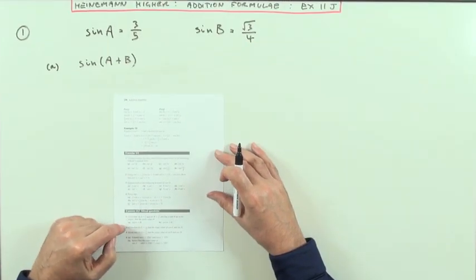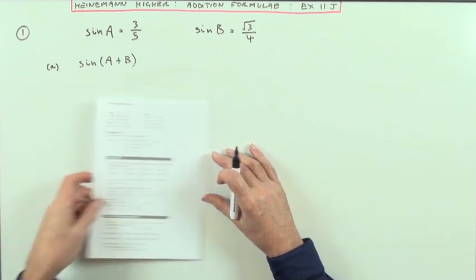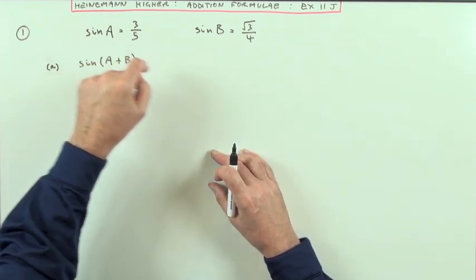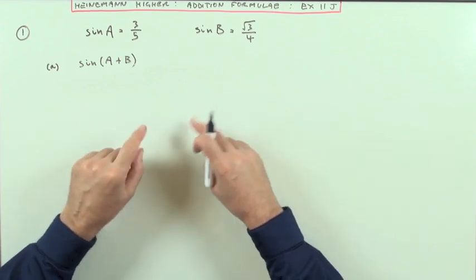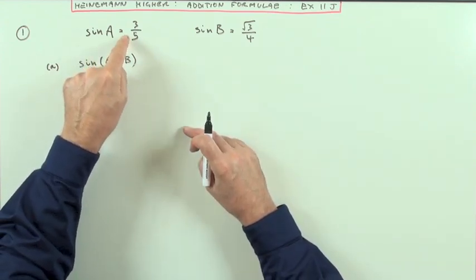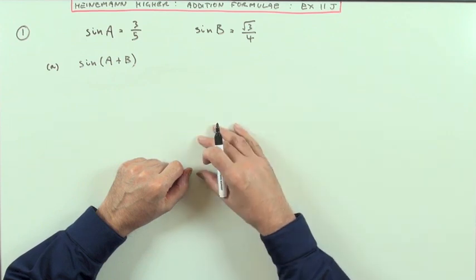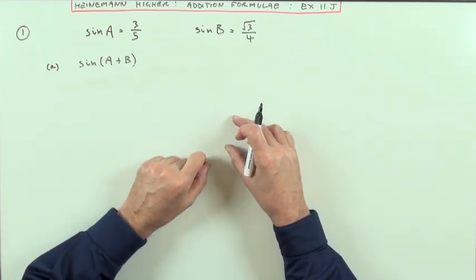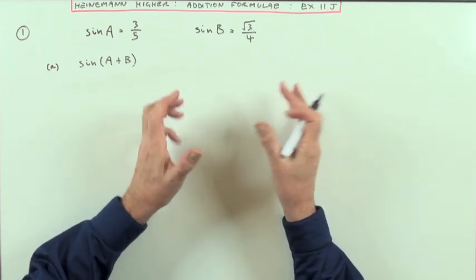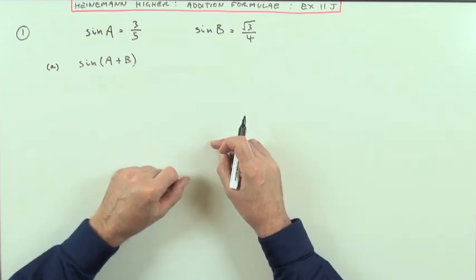For question one, we're finding the exact value of sin(A+B) given the exact values of sin(A) and sin(B) separately. It's not a case of finding A equals inverse sine of 3/5, getting an approximate answer, finding B equals inverse sine of √3/4, getting an approximate answer for both angles, adding them together, and finding the sine to get an approximate answer. We need the exact value.